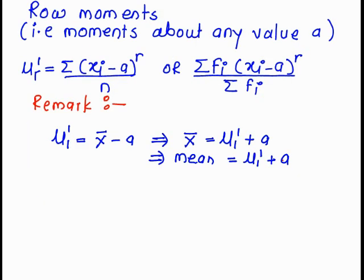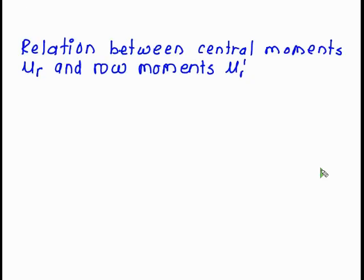The next remark: mu 1 dash is equal to X bar minus a, where X bar is mean. So we get X bar is equal to mu 1 dash plus a. So if you want to find the mean, you take the value of a and the value of mu 1 dash.